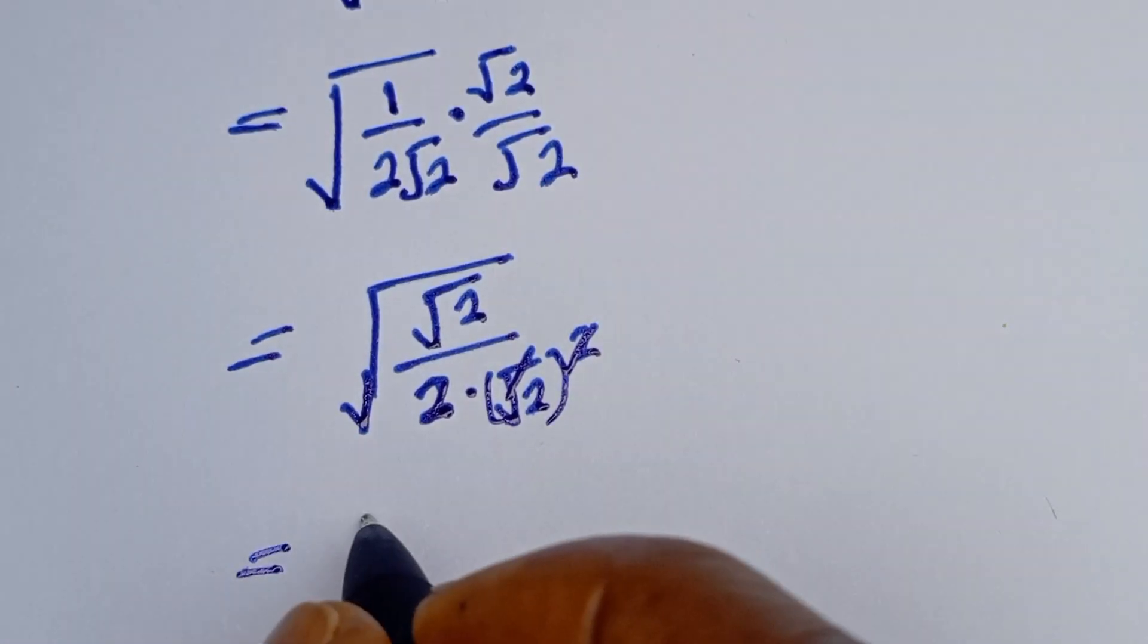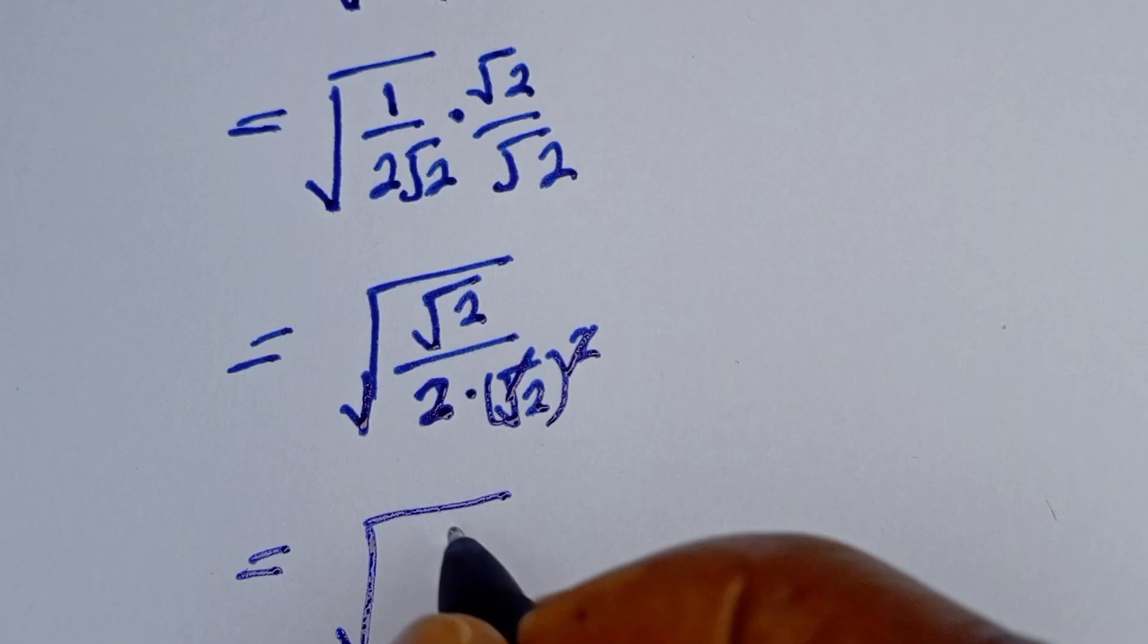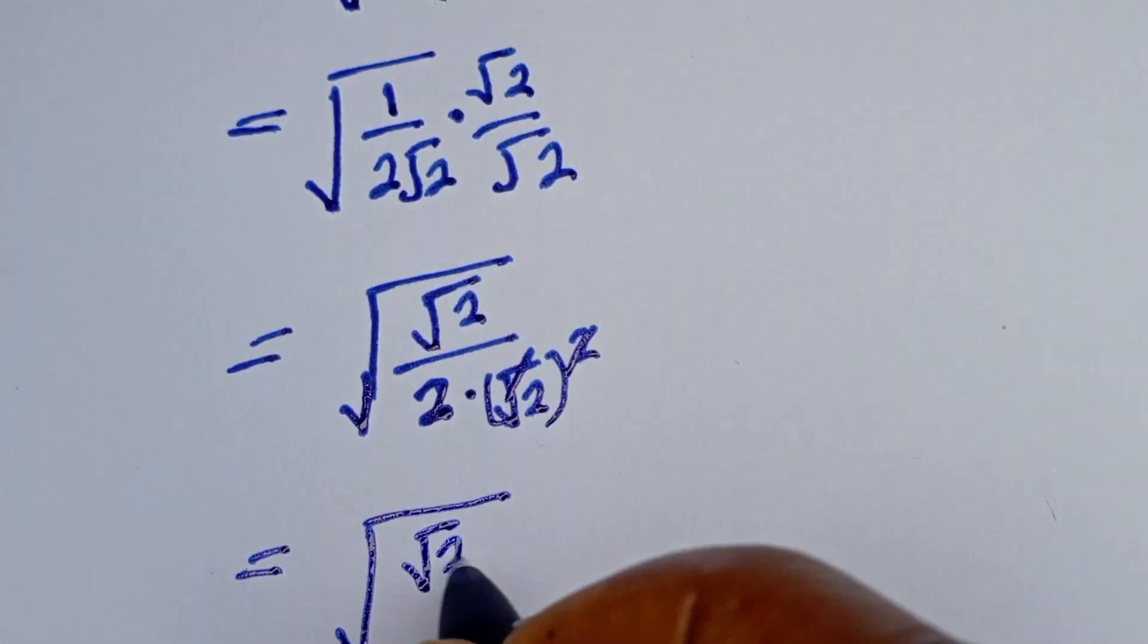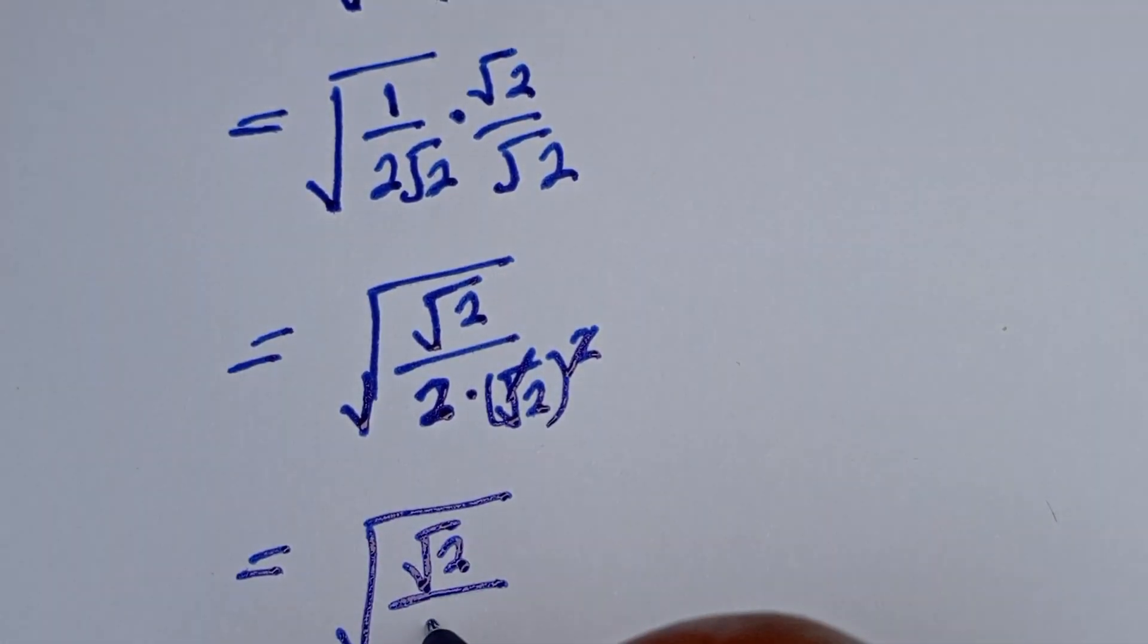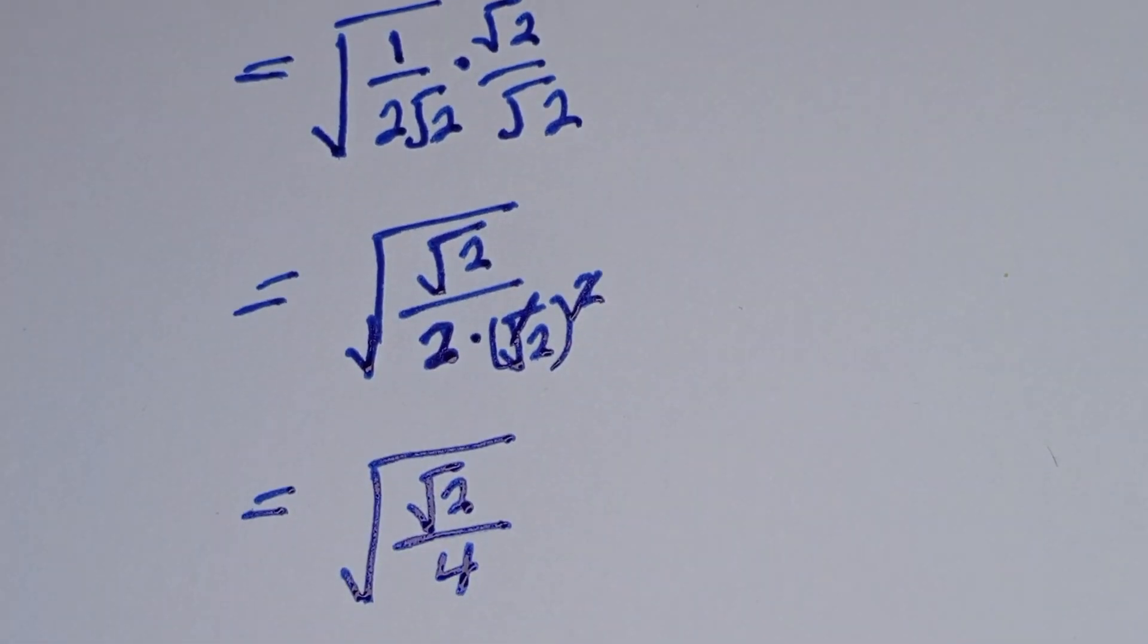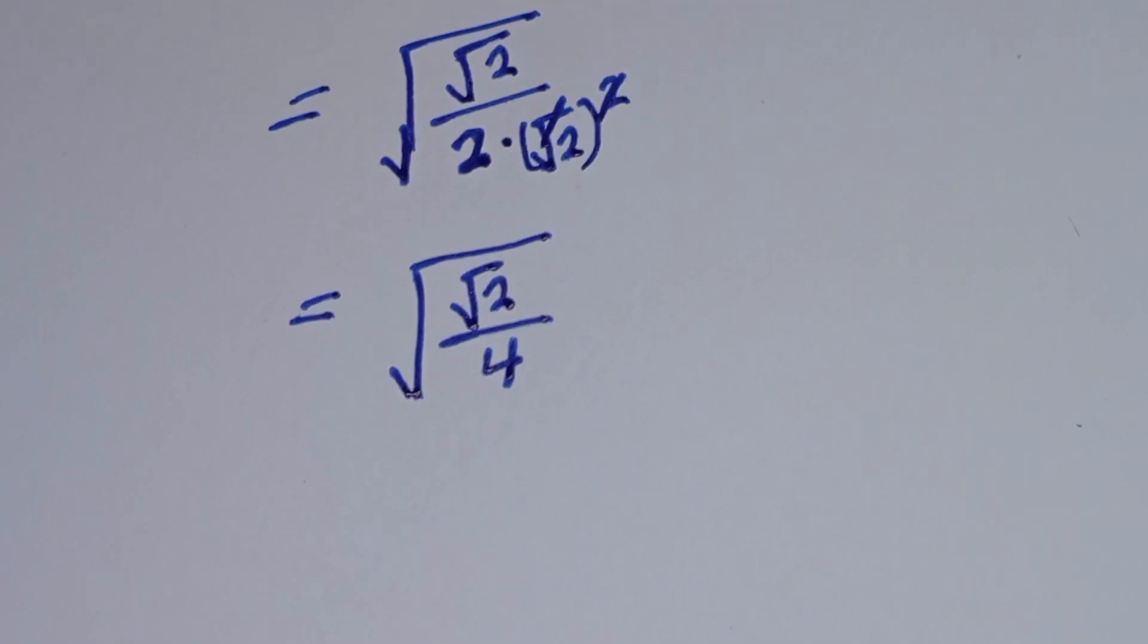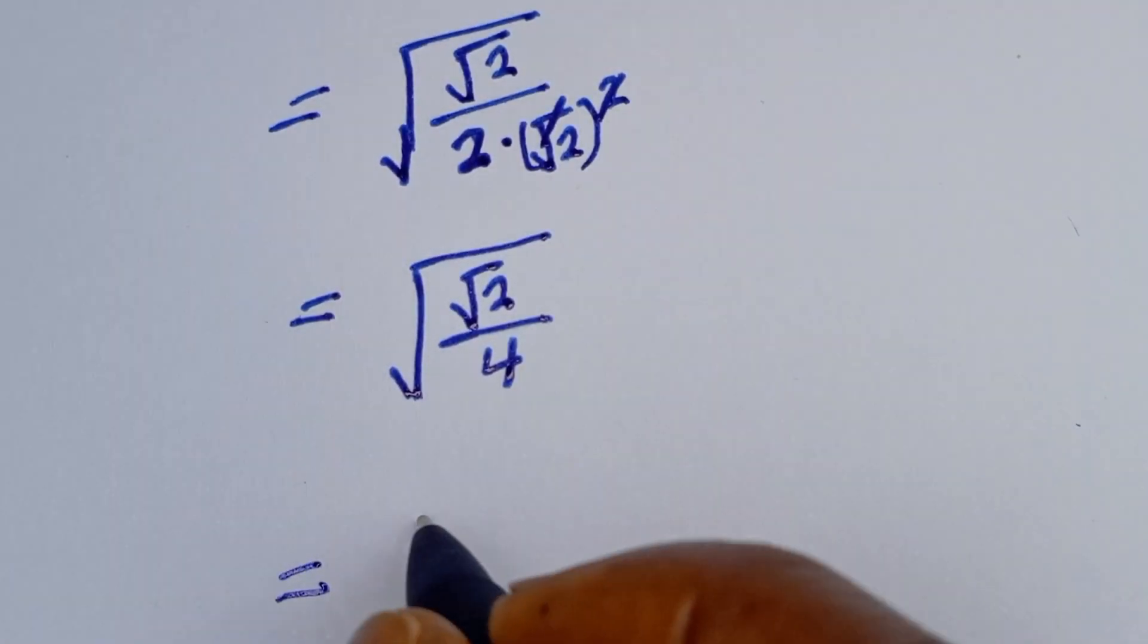This is equal to the square root of root 2 divided by 2 times 2, that is 4. And this is equal to the square root of